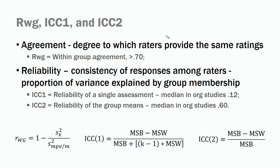Now let's talk about RWGs, ICC1, and ICC2 — agreement and reliability. When running multi-level models, we need to assess whether people in a team or group agree or reliably report on the measures we want. For agreement, we use RWGs — within-group agreement — and the standard is that agreement should be higher than 0.7. For example, if three people in a group all report 1, 2, and 3 on a construct, that indicates high agreement.